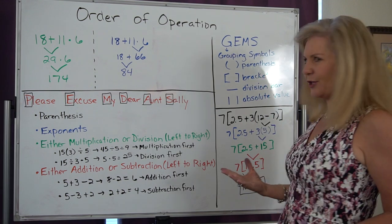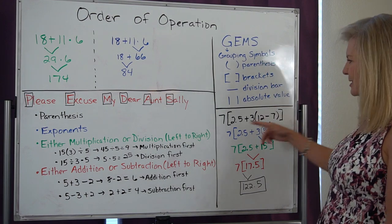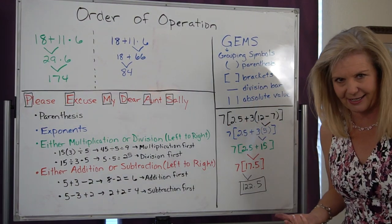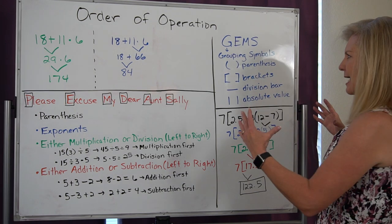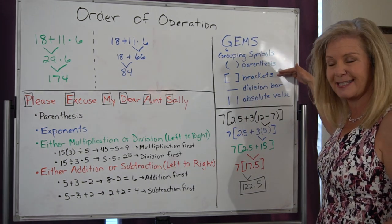Now, what if you have multiple symbols? How do you go about solving the order of operations? If I have brackets and parentheses, I go inside my brackets and then I have to follow my order of operations again.